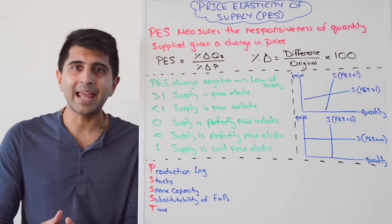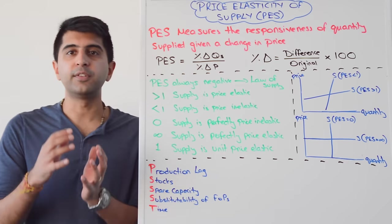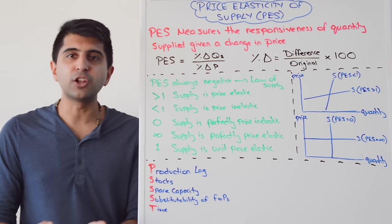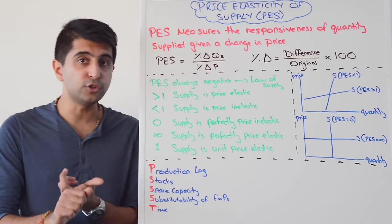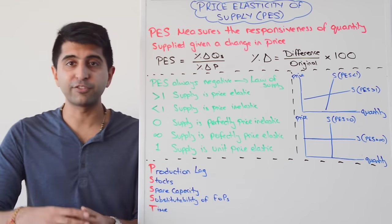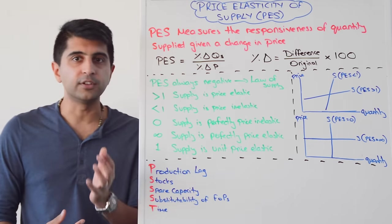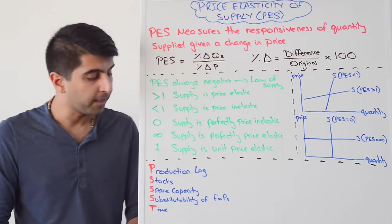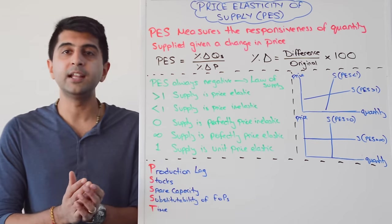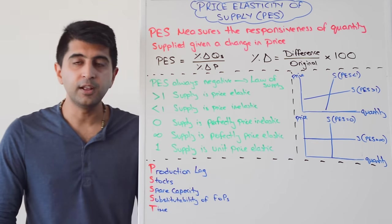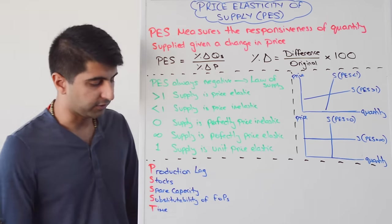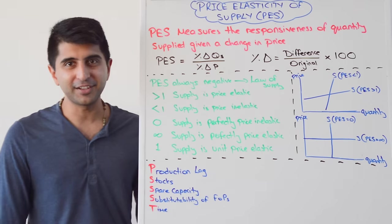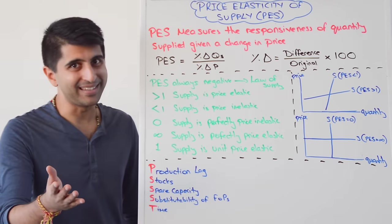Finally, T stands for time period. In the short run, supply is price inelastic, because in economics there is at least one fixed factor of production — usually land and capital — making it very difficult to increase production. In the long run, all factors of production are variable, so it's much easier to increase or decrease production and supply is price elastic. So that covers PSST. Thank you very much for watching — see you in the next elasticity video, which will be XED.